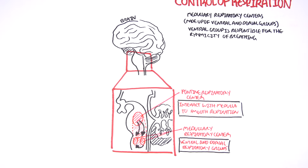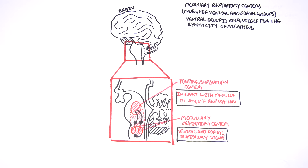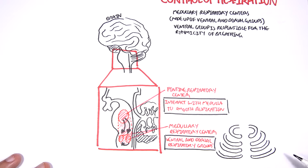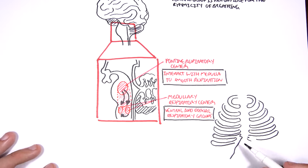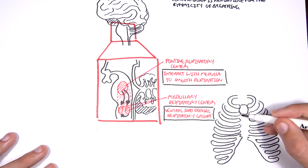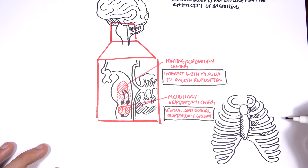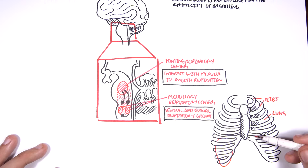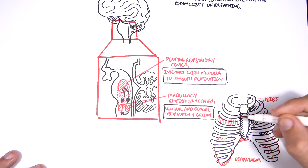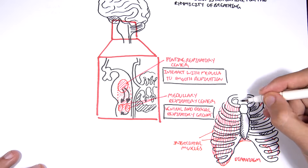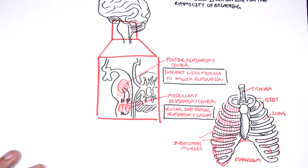To understand how it sends signals for inspiration and expiration, let us look at the thorax. Here I am drawing the thorax, which is made up of the ribs and the sternum. Within the thorax we find the lungs. Beneath the lungs we have an important muscle known as the diaphragm. Another important muscle in respiration is the intercostal muscles, which run between the ribs. I'm also drawing the trachea, which connects the larynx to the lungs.